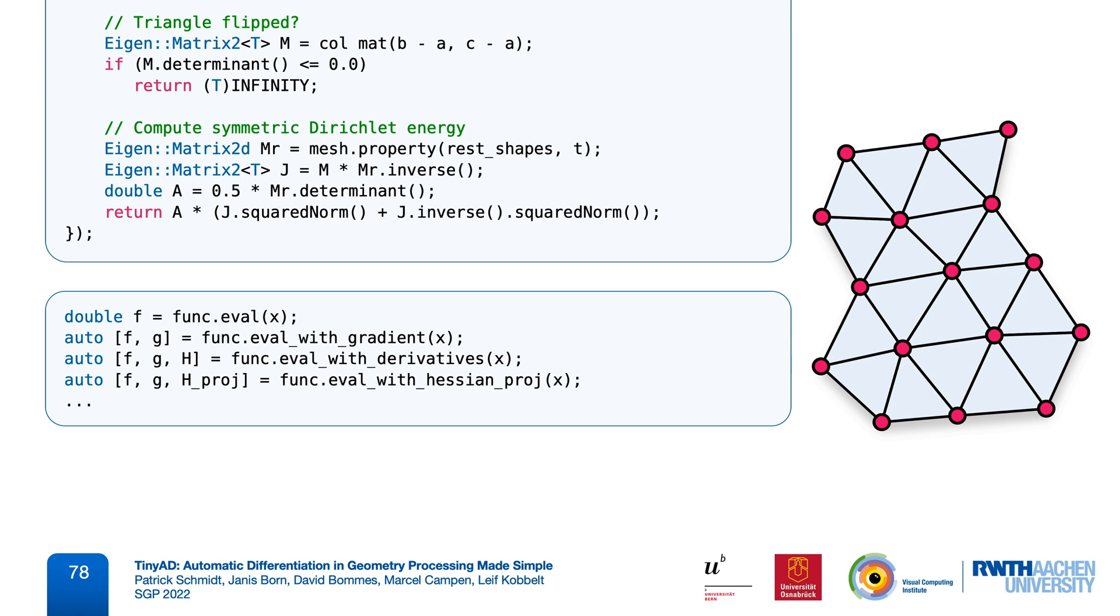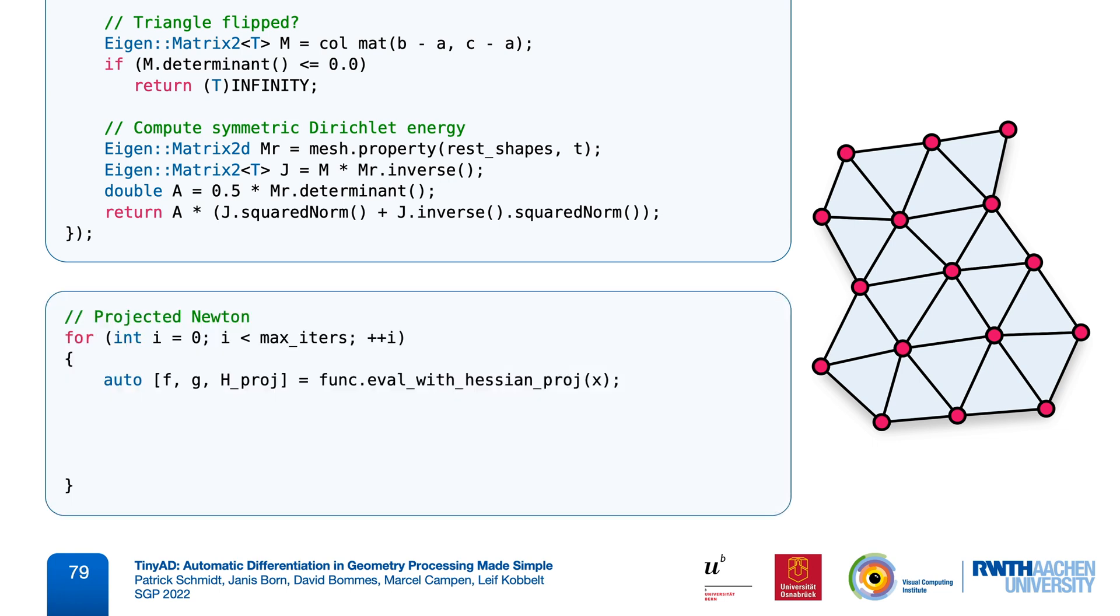Now, with this and a few more simple helper functions that we provide, we are ready to implement, for example, a projected Newton solver in just a few lines of code. So, in each iteration, we compute the current function value, gradient, and projected Hessian, and then use these to compute an update direction, check a convergence criterion, and perform a line search. And this is really all we need to do to implement a basic mesh parameterization algorithm.